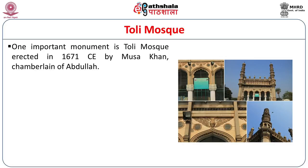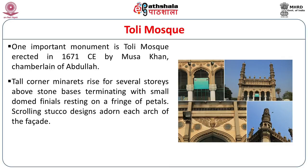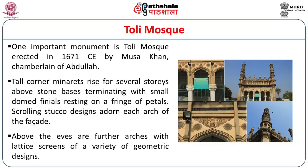On the way from Golconda to Hyderabad is found Toli Mosque, another grand mosque and one of the best in all of Qutub Shahi creation, built in 1671 by Musa Khan, chamberlain of Abdullah. This mosque has corner minarets rising to several stories above stone bases, terminating in small domed finials resting on a fringe of petals. Scrolling stucco designs adorn each arch of the facade, and above the eaves are further arches with lattice screens of a variety of geometric designs — one of the most beautiful Qutub Shahi architectural remains.